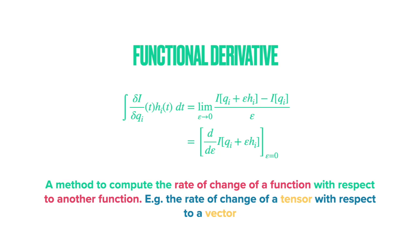In practical terms, we introduce the perturbed definition of the function into our function, take the derivative with respect to epsilon, and eliminate the parameter. This method allows to differentiate continuous quantities such as the rate of change of a tensor with respect to a vector.